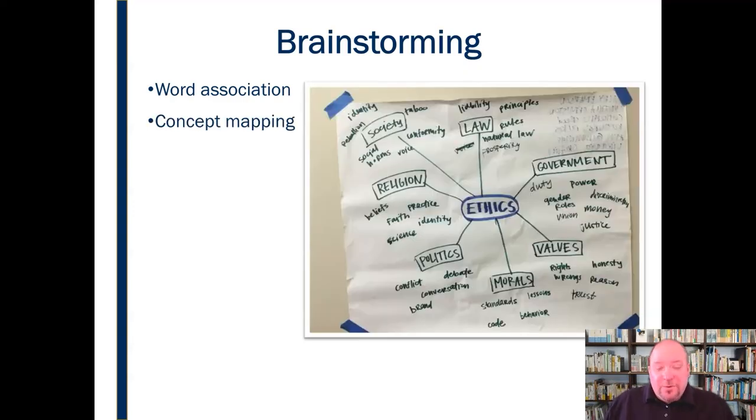Another more organized or directed brainstorming activity is called concept mapping, where we start again with that one core idea in the middle. And then we branch, what are some of the branches that come off of that? What are some of the branches that come off of those branches? Eventually getting more and more narrow and specific as we branch out from that central topic till we get to an idea where we feel like, okay, this is appropriate. These are ways that we can begin to narrow down some of these topics.